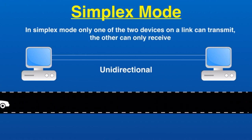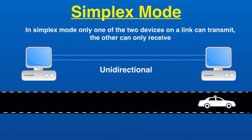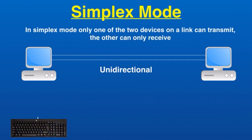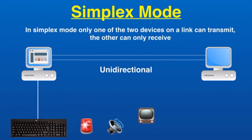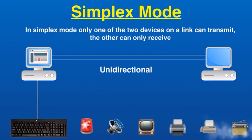Simplex mode can be thought of as a one-way road where traffic travels only in one direction and no vehicle from the opposite direction is allowed. A keyboard and monitor relationship is a classic example — the keyboard can only send input to the monitor, and the monitor can only receive and display it. Other examples include fire alarms, loudspeakers, television broadcasting, computer to printer, scanner to computer, and radio transmission — we cannot send a message back to any of them.